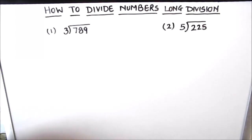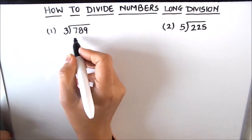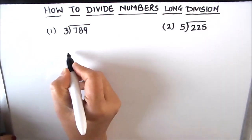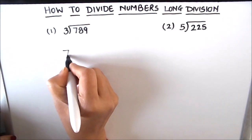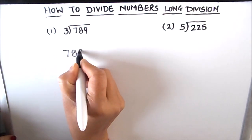Hello everyone. In this video we are going to learn how to divide numbers using long division. So without wasting any time, let's start with the first division which is 789 divided by 3.